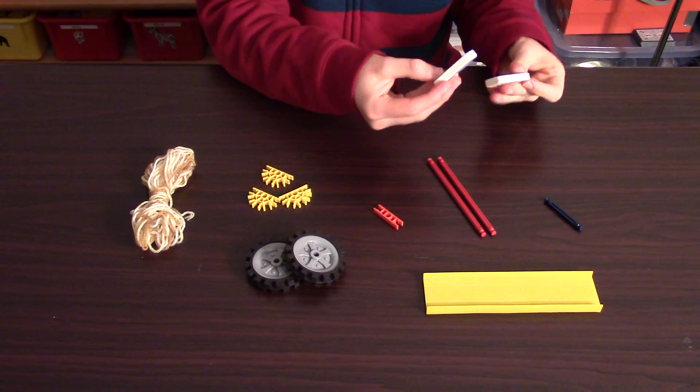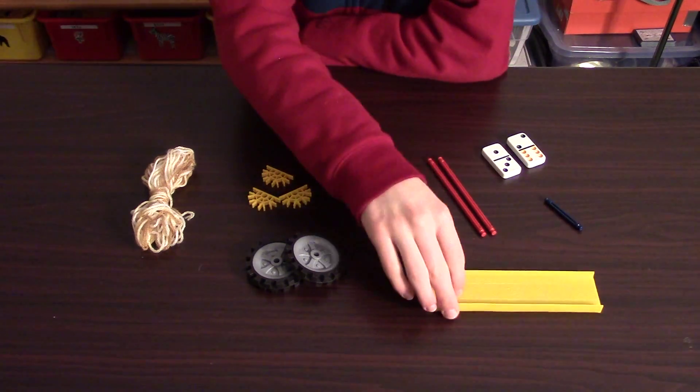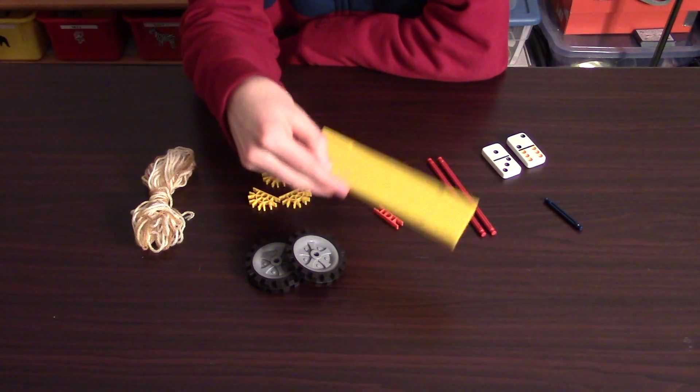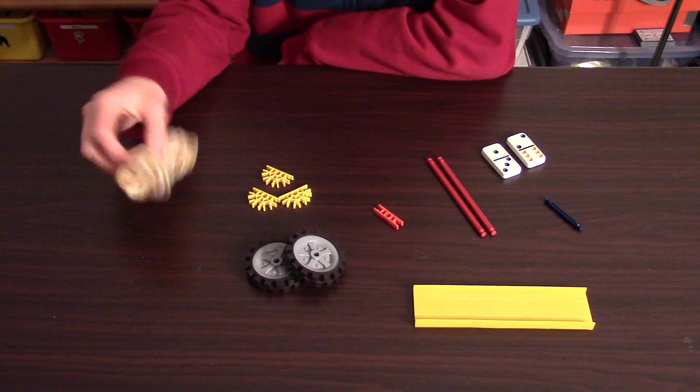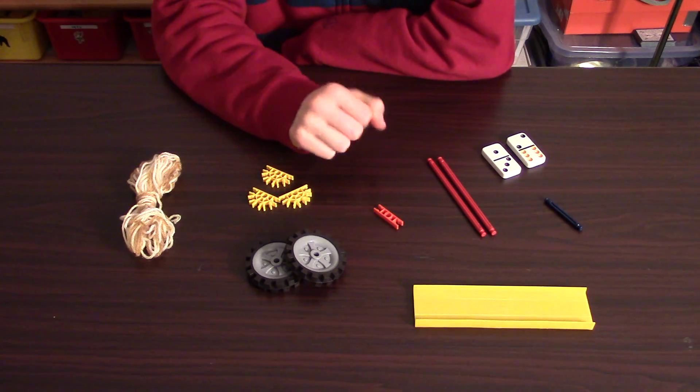Now, let's go through the materials that you're going to need quickly. You're going to need two dominoes. You're going to need one piece of short track, preferably compatible with Knex pieces. String.